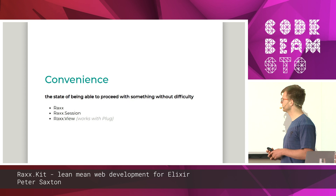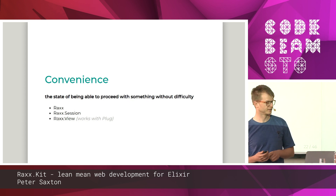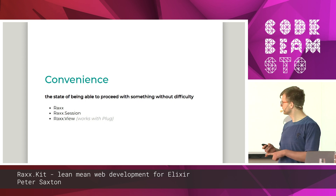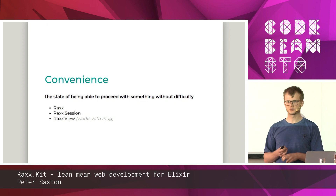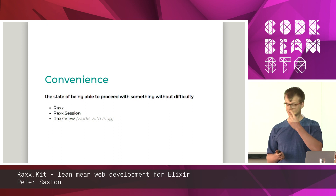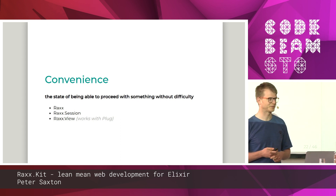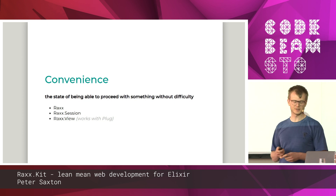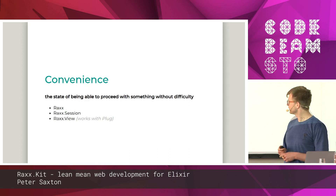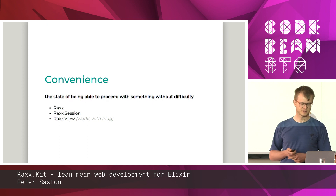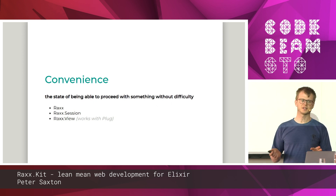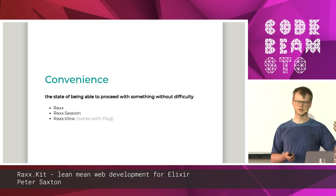The next level is convenience. Convenience takes these capabilities and starts bundling them together. Raxx is the number one thing for this — the fact that there is an interface allows you to use more than one server. Session and View are good examples as well. As I mentioned, RaxxView works with Plug. These are all perfectly useful without generators. If you go to the Raxx readme, it makes a small mention of RaxxKit but does not say to start with the generator — it says this is where you add it to your supervision tree. It is quite important that it is possible to know everything about the project.